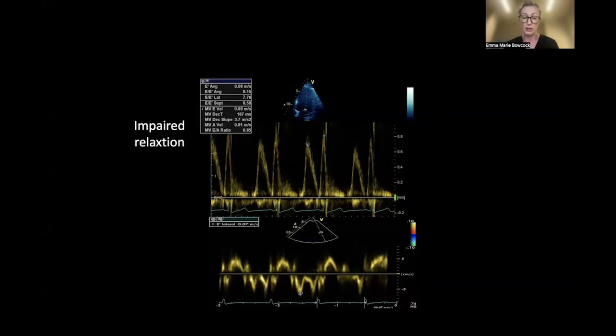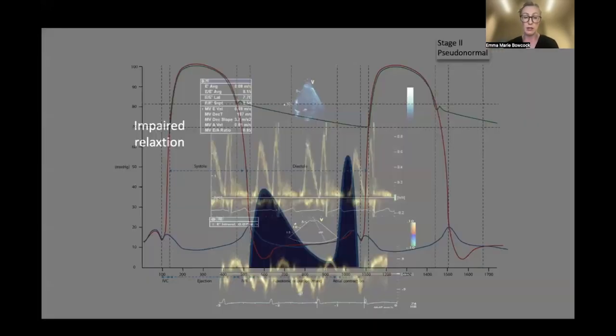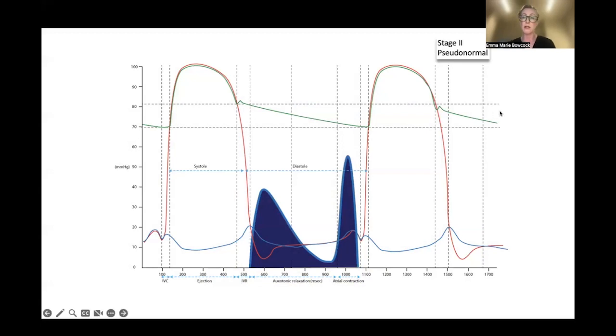As we move to stage 2 or grade 2 diastolic dysfunction, sometimes referred to as pseudonormal, we tend not to use that too much. Essentially what we want to know in the ICU population is are we dealing with raised left atrial pressures, because that's really going to affect what we do. We'll talk more about how it affects our practice as we look through some cases.